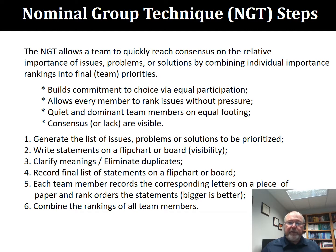Each team member rates the items, one through six. Whichever one you think is most important, give it a six; next most important, a five; and so on down to the least important, which gets a one. No ties allowed — you make a decision about which is most important, which is next most important, and which is least important. Then you combine the rankings of all team members and see how that sorts out.